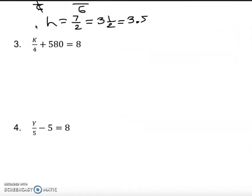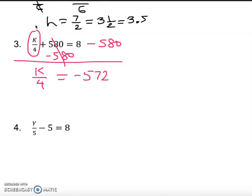Number 3, same thing. We need to isolate this, so we don't want to touch this variable term. We do minus 580 on both sides to cancel it out. Bring down K over 4 equals 8 minus 580, which is negative 572.